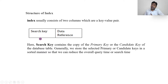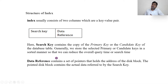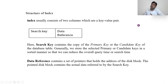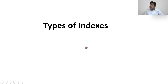In the search key, we will have a primary key or a candidate key. Generally, primary key and candidate key are unique. Now, what is data reference? Data reference contains a set of pointers that hold the address of a disk block — just like we have a page number in a book's index, the same way we have the address of a disk block. Whenever you search with the search key, it will automatically go to the particular point where the data is stored in the database. So the search key helps us to search, and the data reference helps us to point to the address.